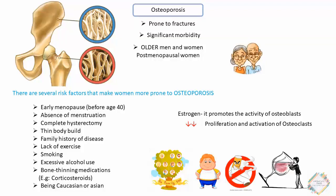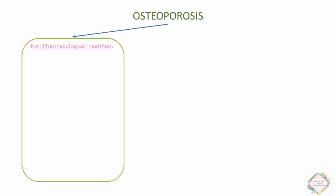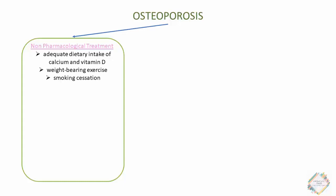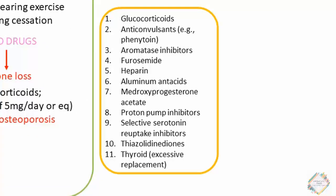Treatment strategies for osteoporosis include both non-pharmacological and pharmacological approaches. Non-pharmacological treatment includes adequate dietary intake of calcium and vitamin D, weight-bearing exercise, and smoking cessation. We should also avoid drugs that increase bone loss, such as glucocorticoids like prednisone at 5 mg/day or more. Other drugs causing increased bone loss include anticonvulsants, aromatase inhibitors, furosemide, heparin, aluminum antacids, medroxyprogesterone acetate, PPIs, SSRIs, thiazolidinediones, and thyroid hormone with excessive replacement.